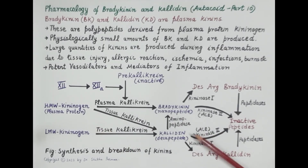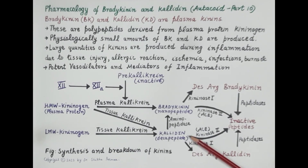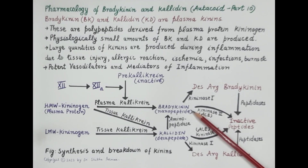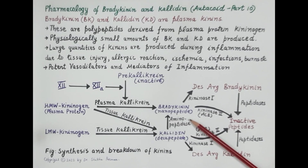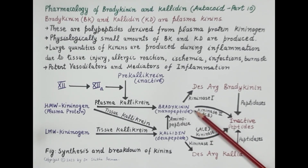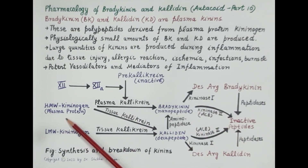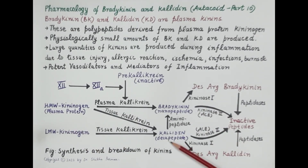Calidin is a decapeptide — made up of 10 amino acids — whereas bradykinin is a nonapeptide made up of nine amino acids. Removal of one amino acid from calidin by the enzyme aminopeptidase produces bradykinin. So bradykinin is synthesized from high molecular weight kininogen as well as from calidin.